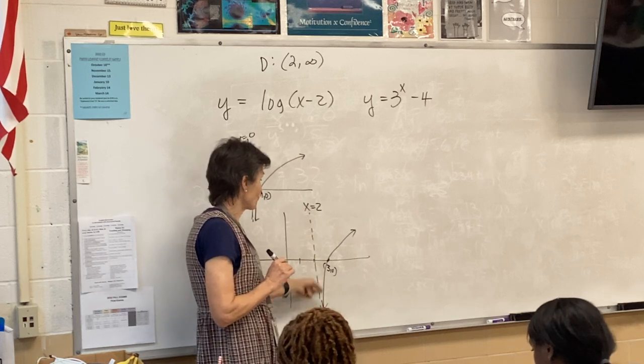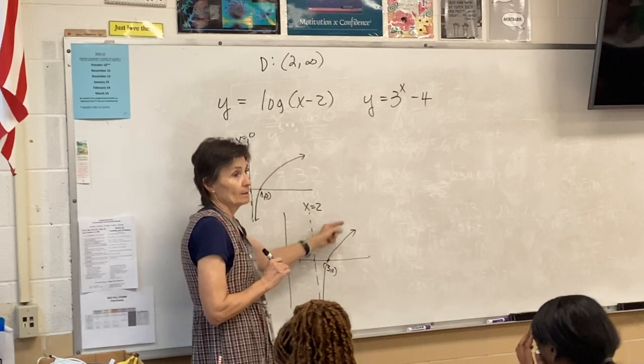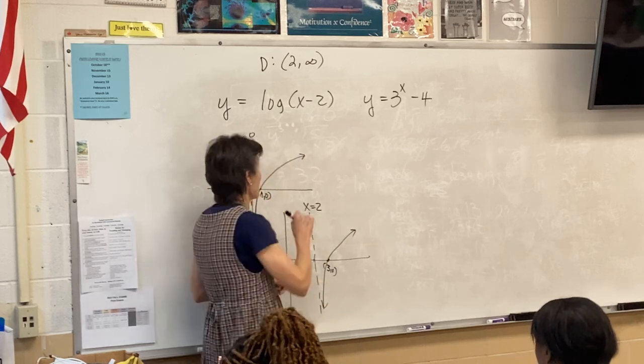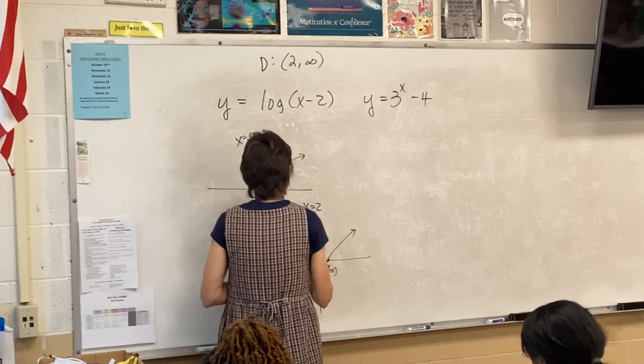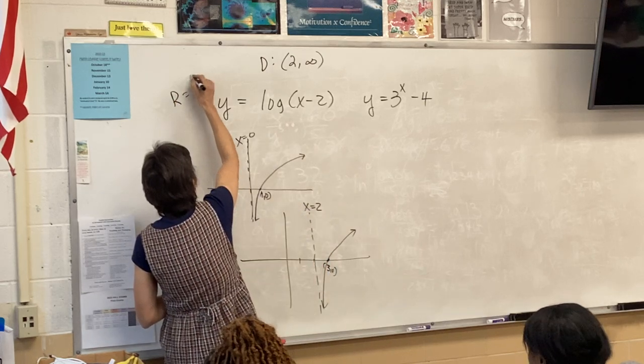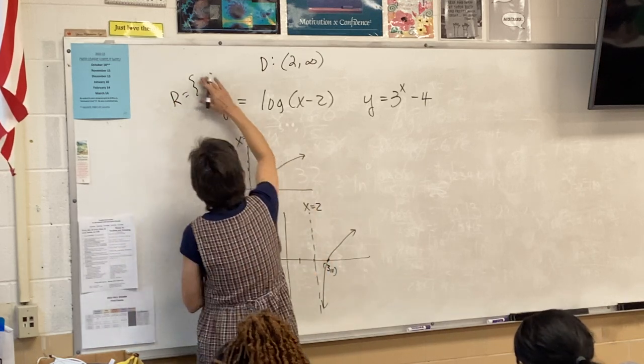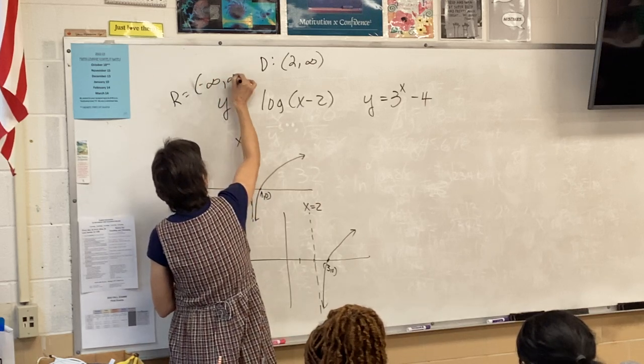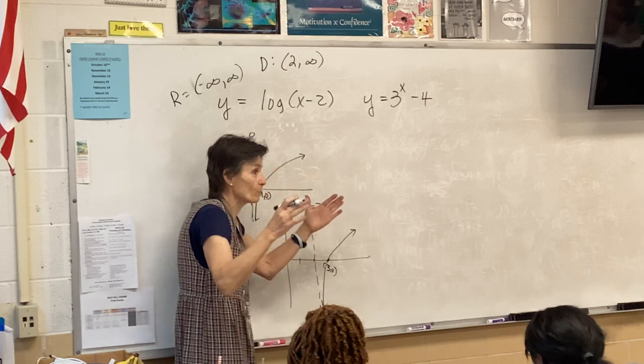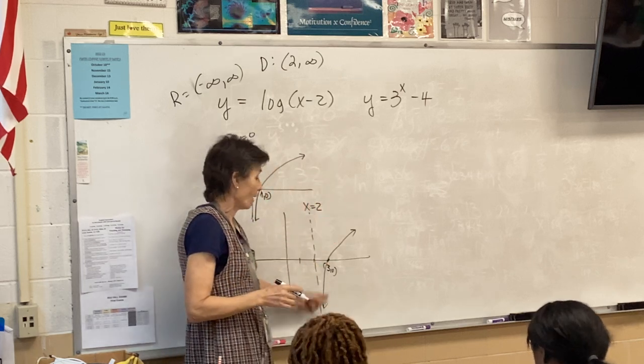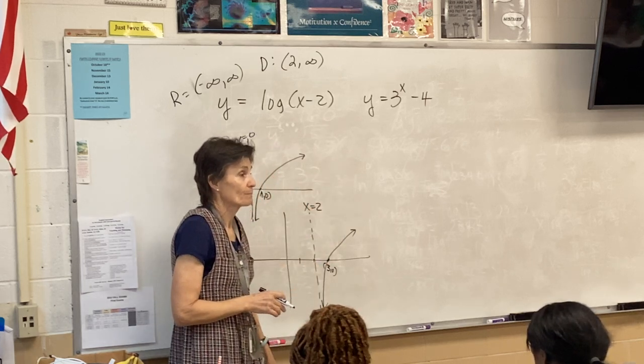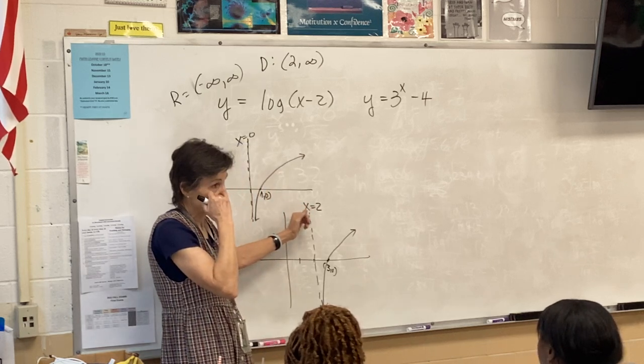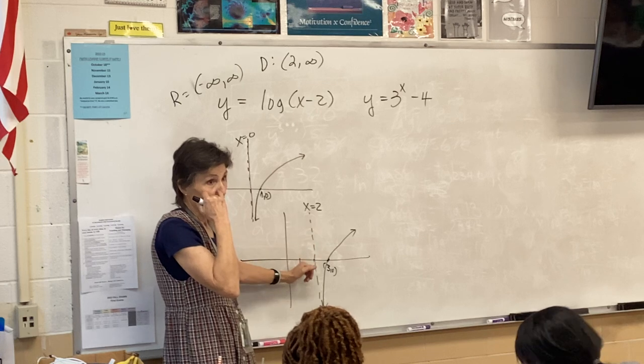Now, what about range? Range is up and down. The range is negative infinity to positive infinity. In other words, all real numbers. Don't we go up and down? The whole shabang. And then asymptotes. Well, that's clear. Your asymptote is at x equals 2.